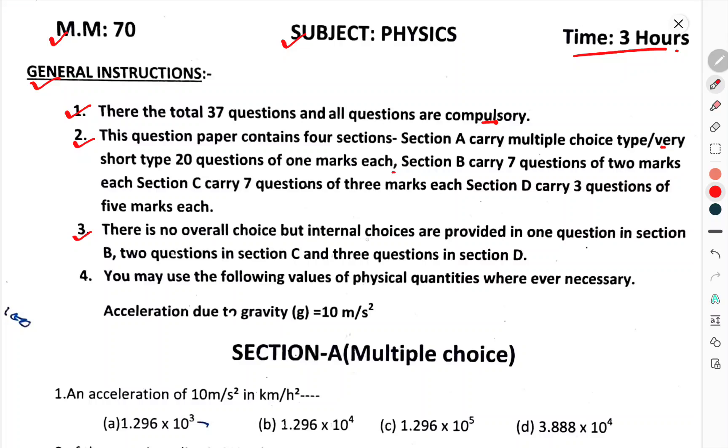There is no overall choice, but internal choices are provided in 1 question in section B, 2 questions in section C, and 3 questions in section D. You may use the following values of physical quantities wherever necessary. Acceleration due to gravity is 10 meter per second square.